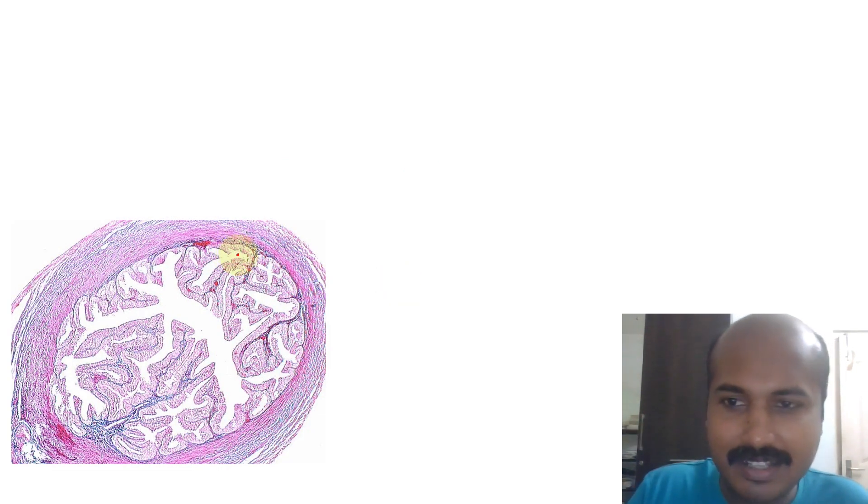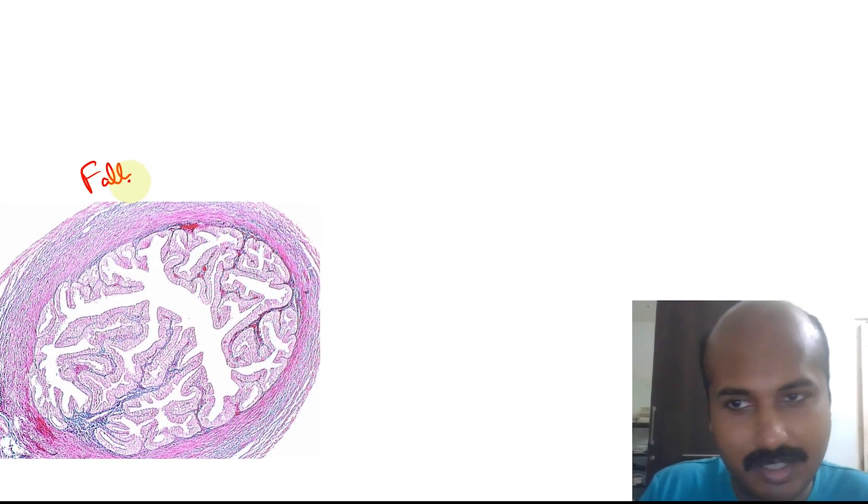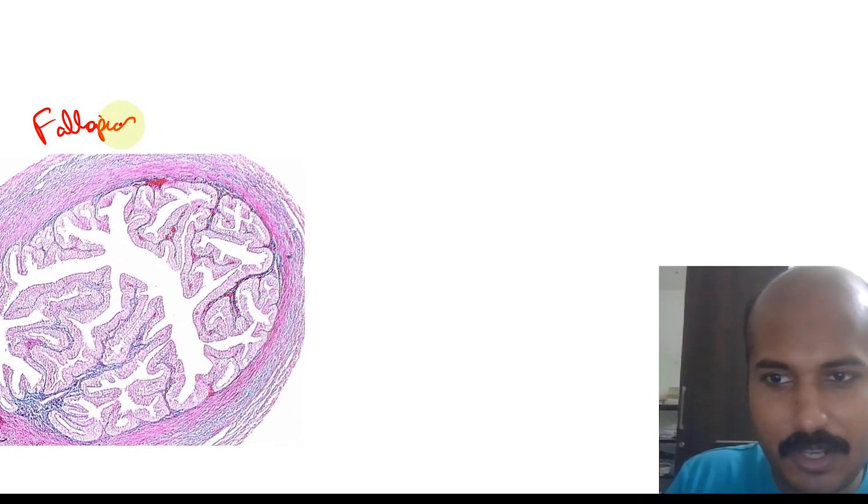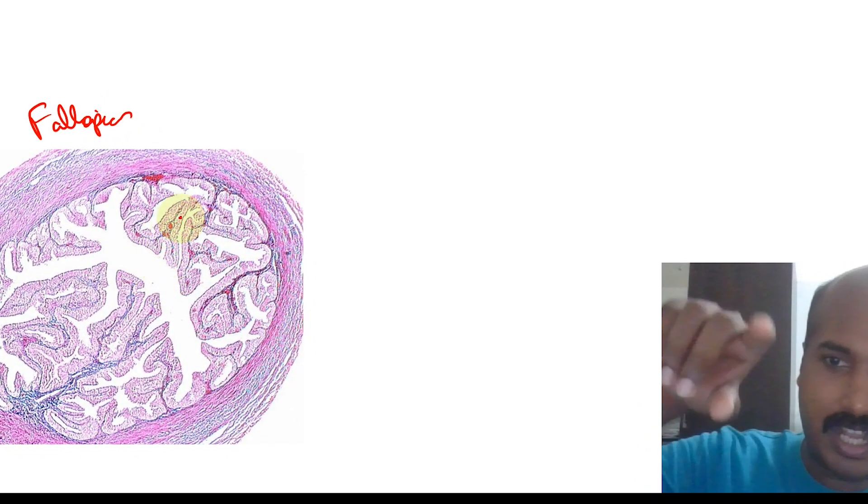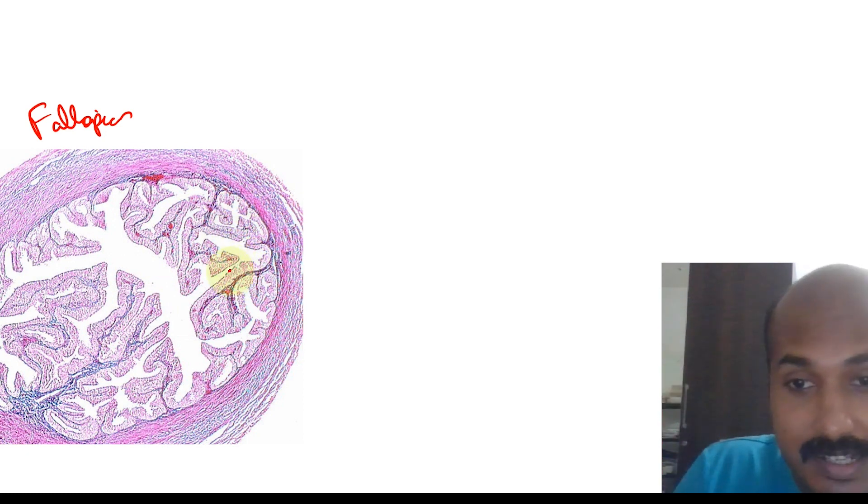To make it more clear, I've taken two representative slides. This is a slide of a fallopian tube, which you will learn in detail later. In this fallopian tube, this is the lumen, and what you're seeing here are all mucosal folds. When you learn fallopian tube later, you'll understand that this is basically epithelium.